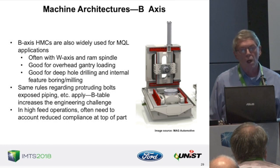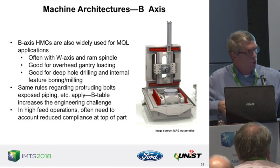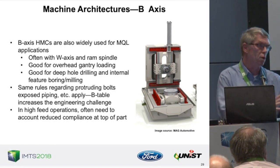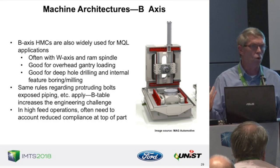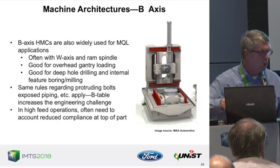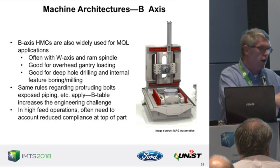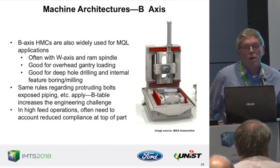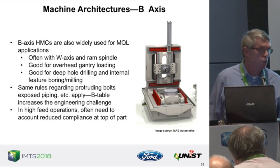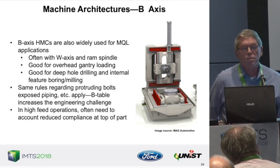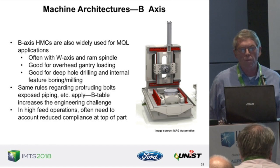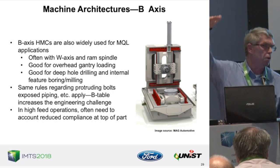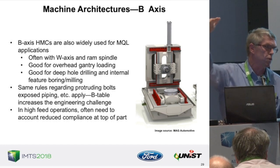Almost all automatic machines are horizontal spindle for unattended operation and safety. B-axis machines are also common, especially for gantry loading or deep-hole drilling with W-axis pull-back. B-axis machines require careful fixture and B-table design to avoid chip collection points. Also, with high-feed MQL operations, stiffness decreases toward the top of the B-table, sometimes requiring feed adjustments.